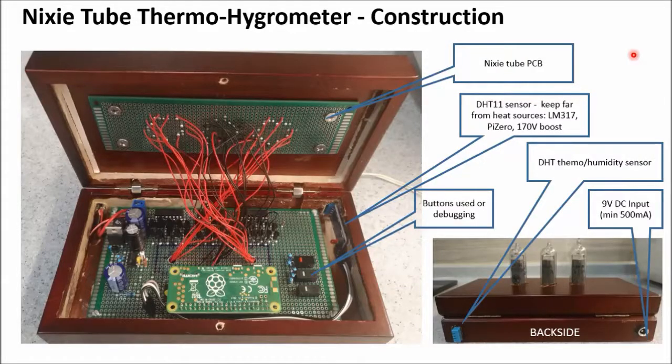Then here you see 3 pins which go to the DHT11 temperature sensor. So this sensor is placed as far as possible away from the heat sources. So here you see the total construction of the PCBs in the box. The Nixie tube PCB mounted to the top of the box with 4 screws. So the Nixie tubes are connected with wires to the control board. Here you have the DHT11 sensor. It's kept far away from all the heat sources. The LM317, the 170 volt boost and also the Raspberry Pi Zero. Here there are some buttons which are only used for debugging, so they are not useful anymore. Then if you look at the back side of the whole construction, you see here the DHT sensor sticking out from the back side. So it can sense the temperature and the humidity. And here there is a 9 volt DC input connector.